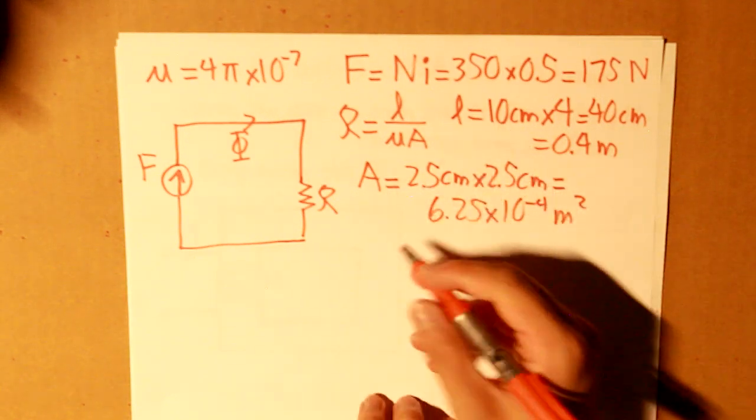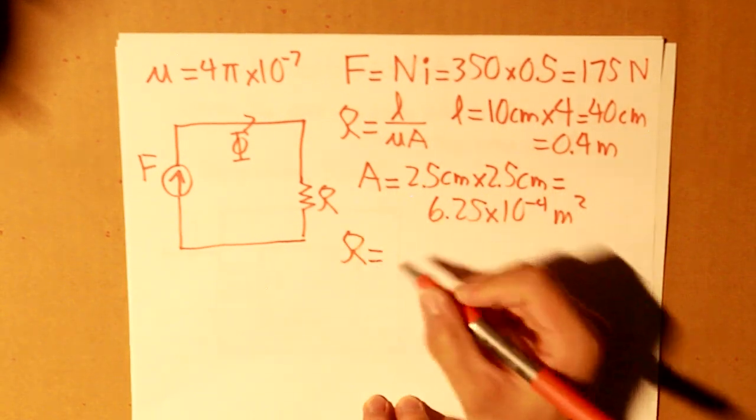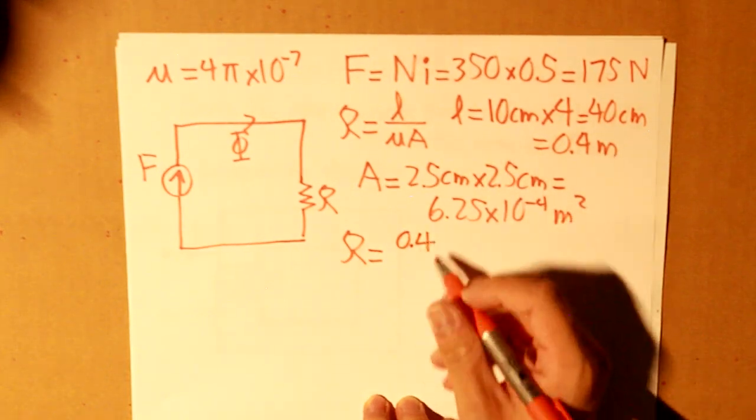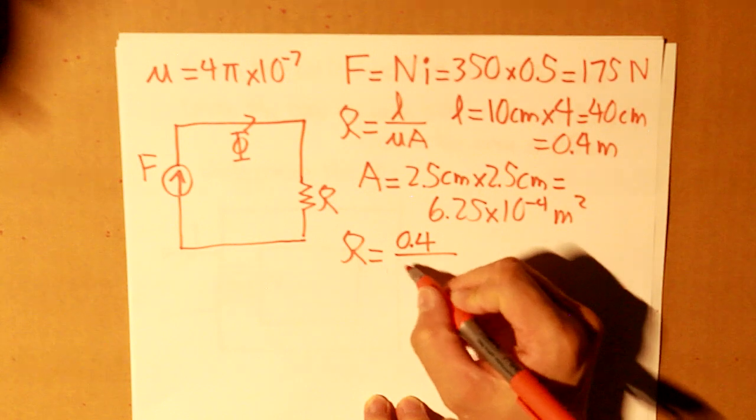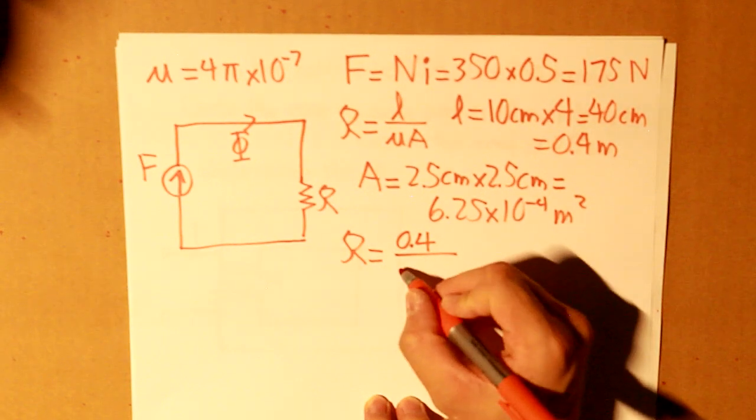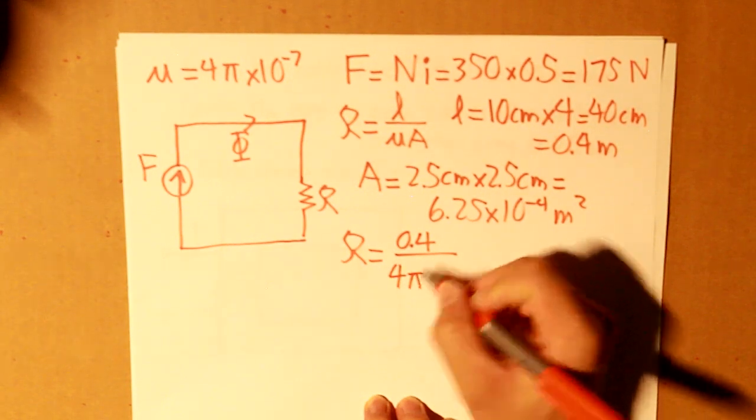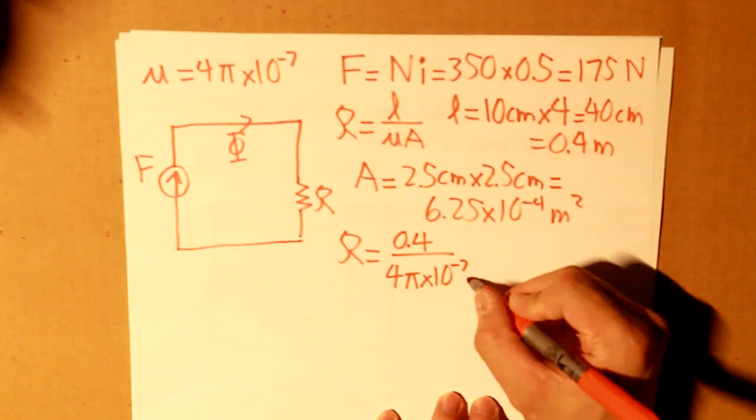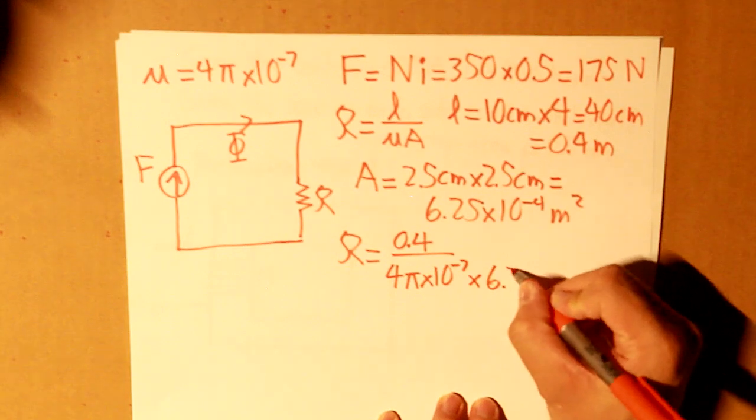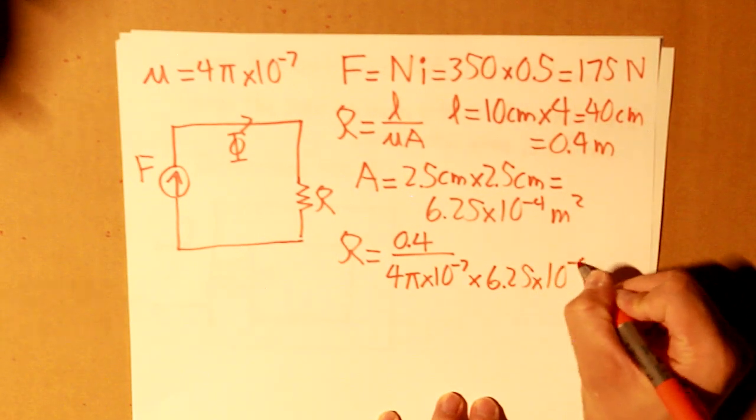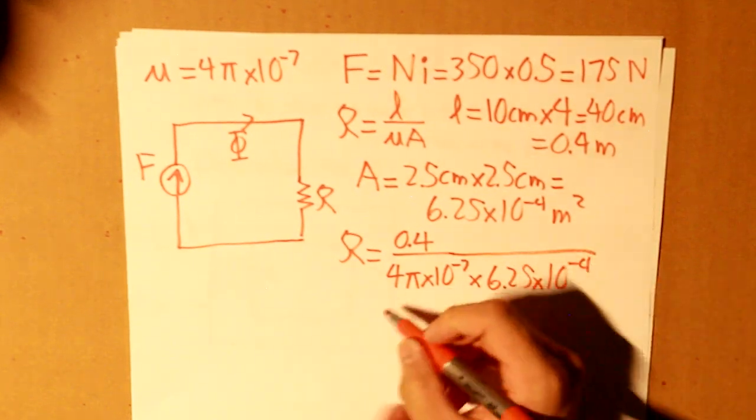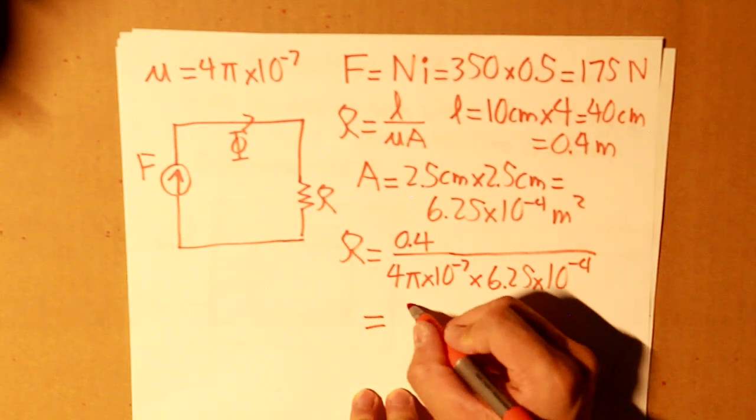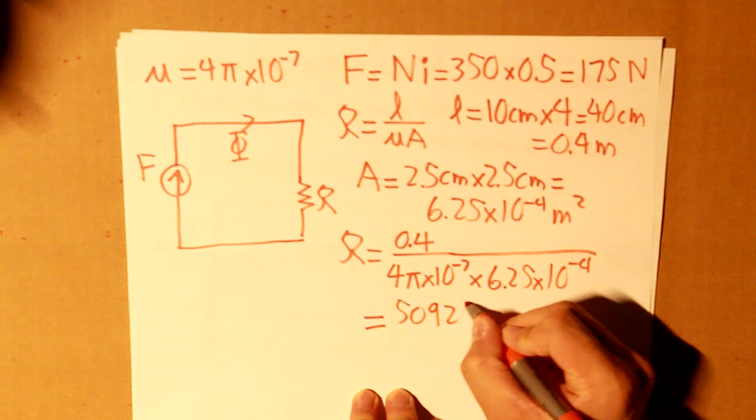Given those two terms, we take the reluctance. The cursive lowercase L is 0.4. Divide that, and then we take the value of mu, the constant value, 4 pi times 10 to the negative 7. Multiply that by 6.25 times 10 to the negative 4.